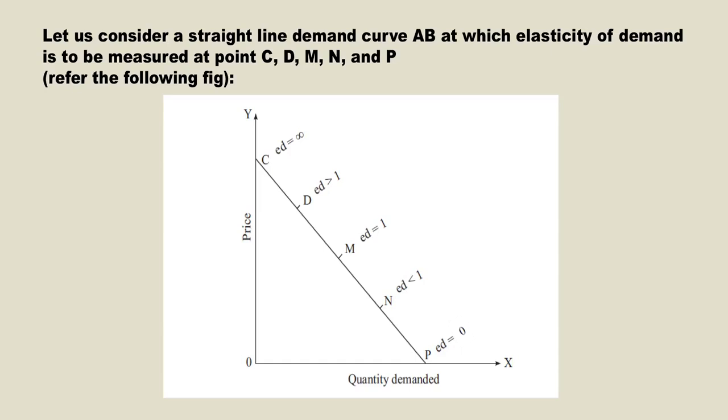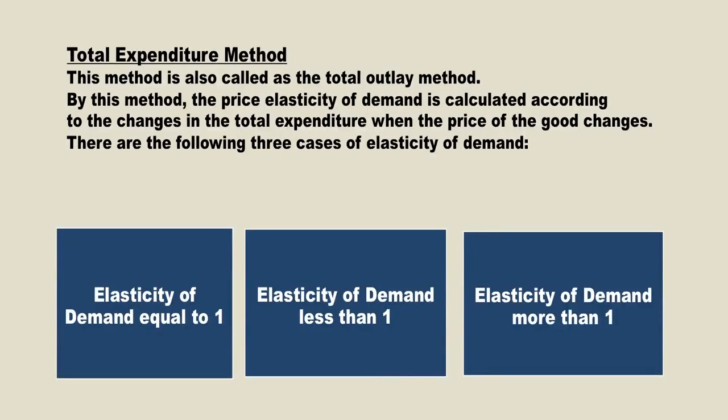The third method is the Total Expenditure Method, also called the Total Outlay Method. By this method, price elasticity of demand is calculated according to the changes in the total expenditure when the price of the commodity changes. There are three different cases: elasticity equal to 1, elasticity less than 1, and elasticity more than 1.